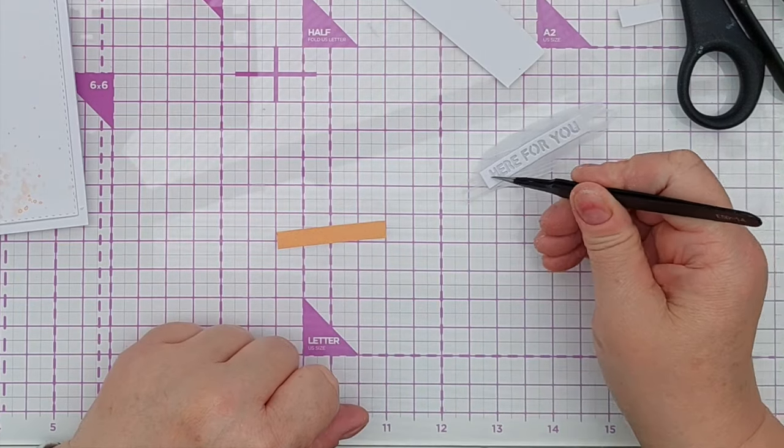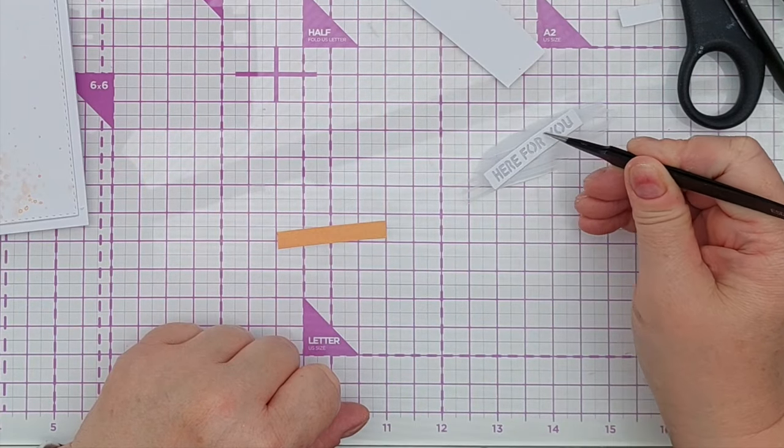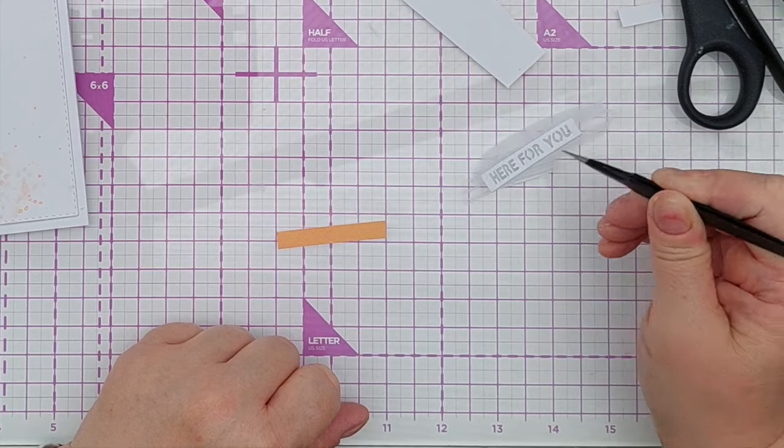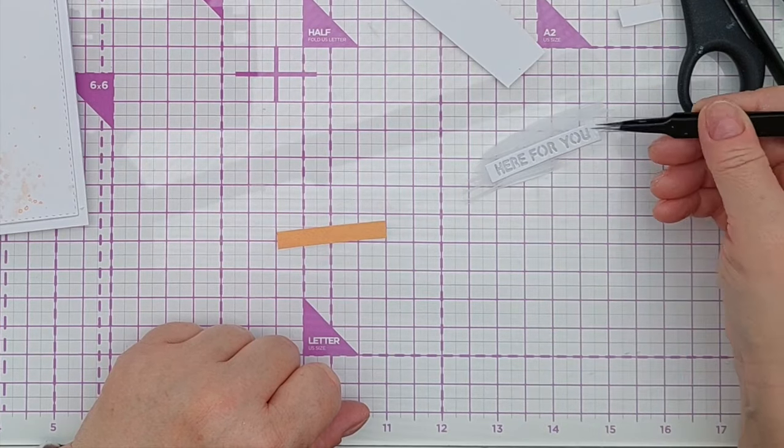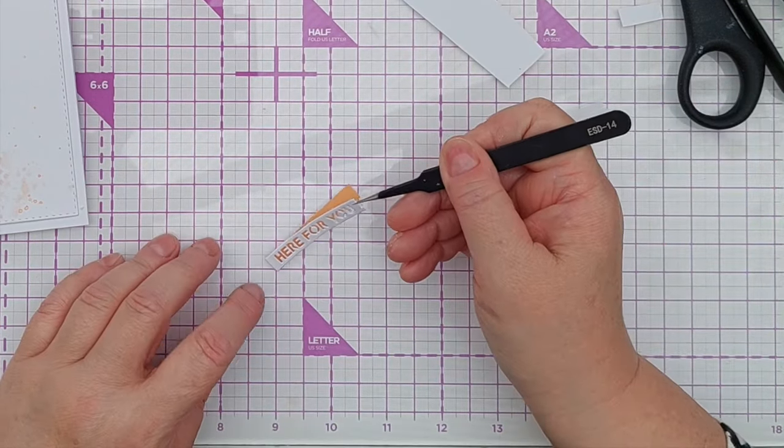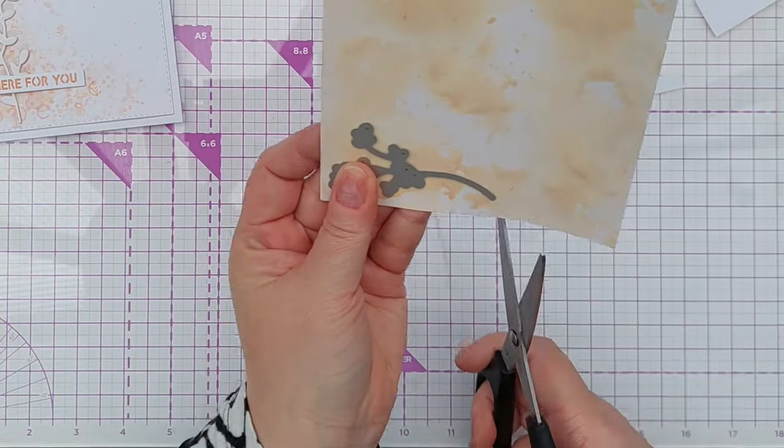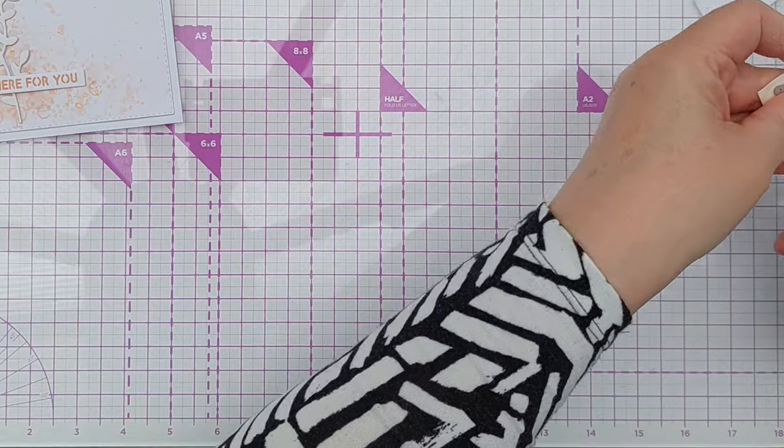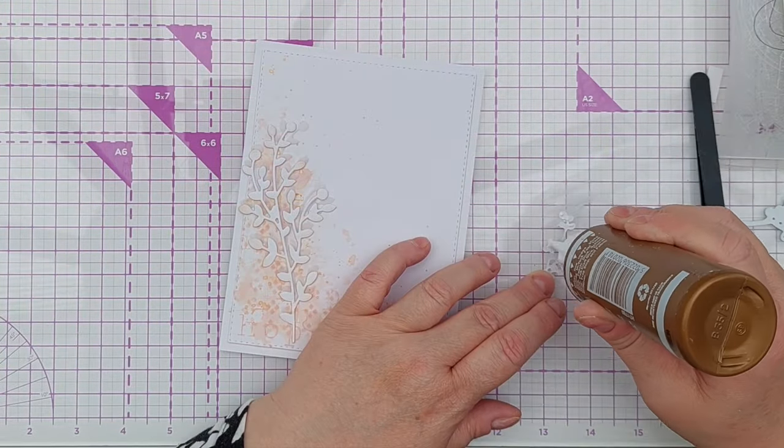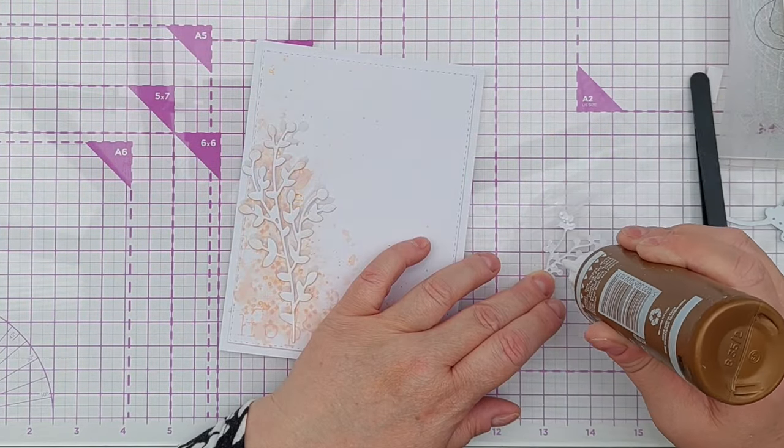Before sticking that down though I did feel I wanted something else. I thought about butterflies, I thought about flowers but I thought no keep it simple just do another branch and I actually used the sparkly dried marigold smoosh background to cut a smaller branch and I really like the way this looks on top of those other branches.